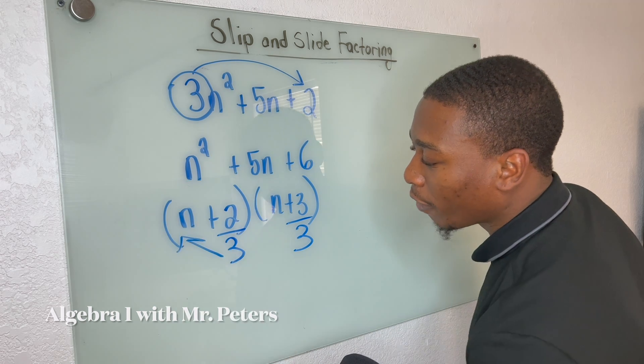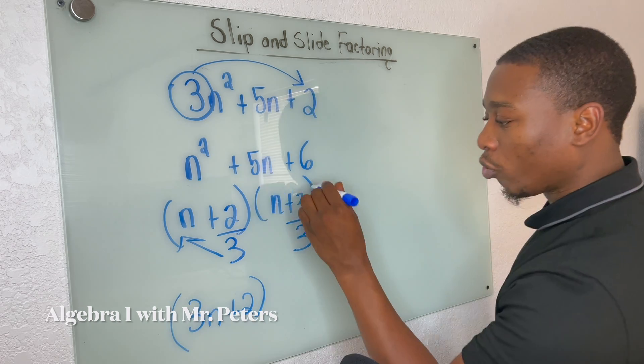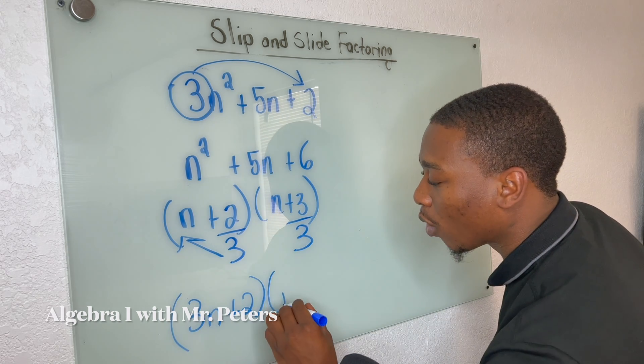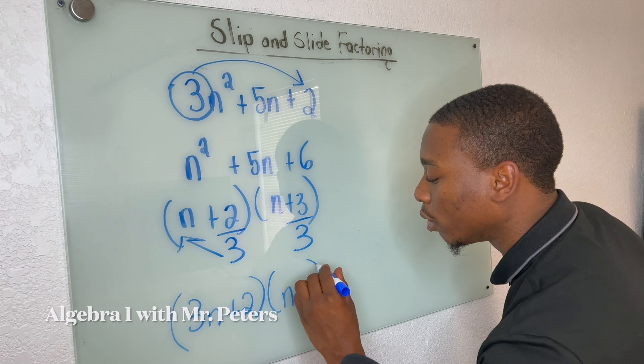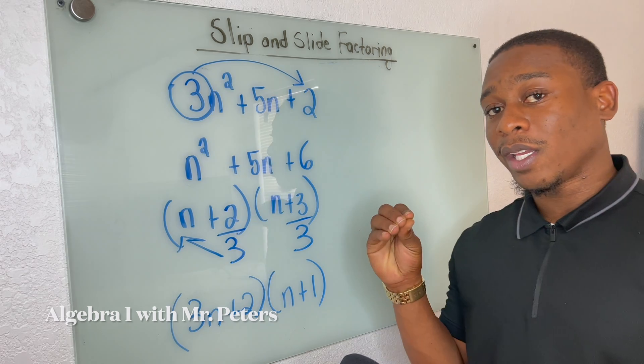So now can't divide evenly. We're going to slide that in front. Three N plus two. Reduce three over three to one. So now we're going to get N plus one. So when you guys are working with the slip and slide method, guys, remember these key things, okay?